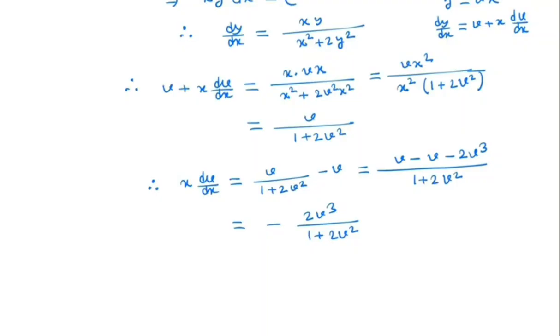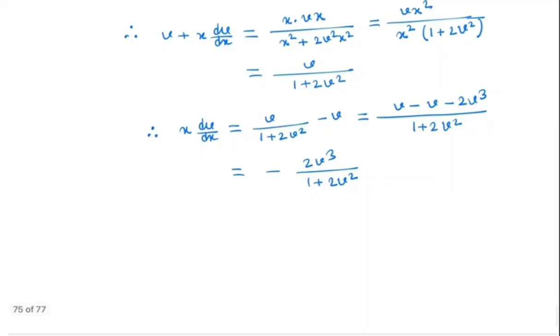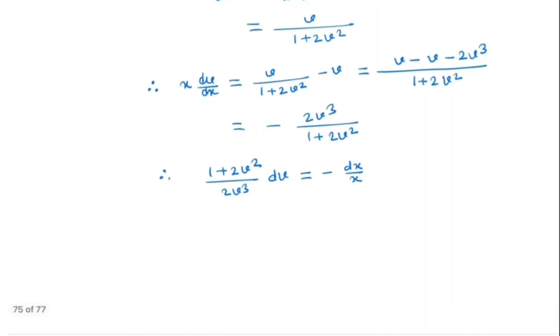So we get a separable equation, so we must separate v and x. So we have 1 plus 2v square by 2v cube dv is nothing but minus dx by x.